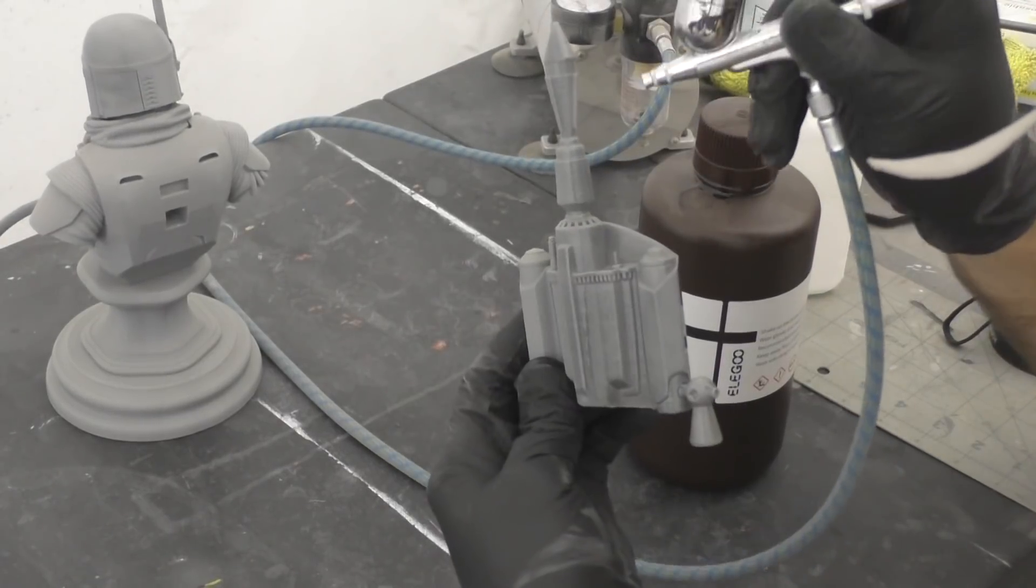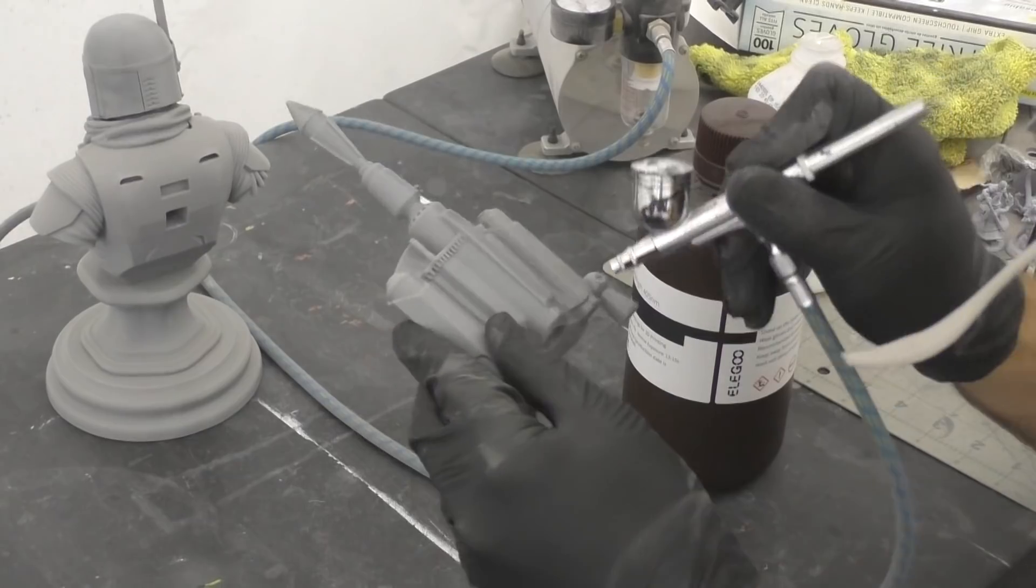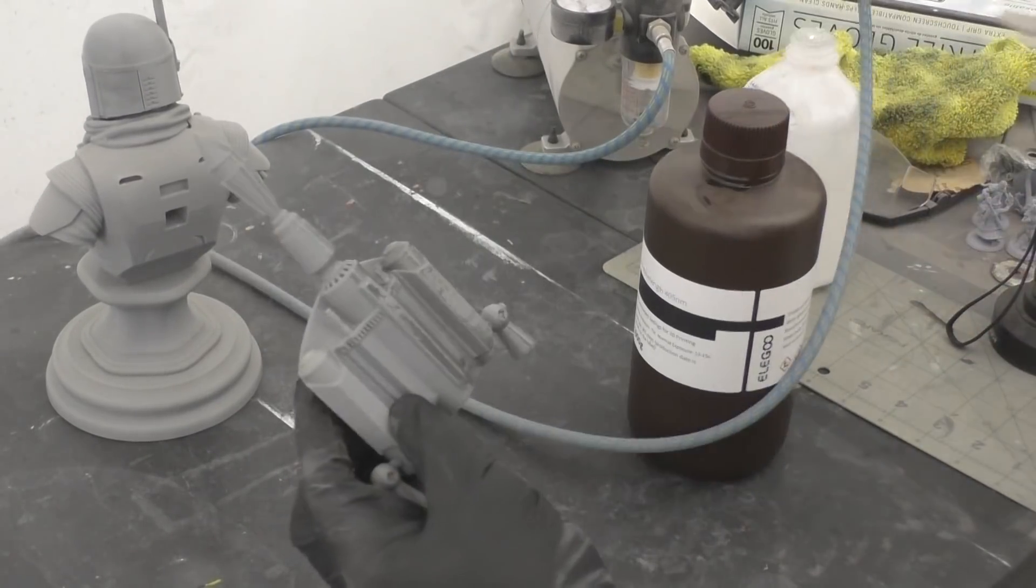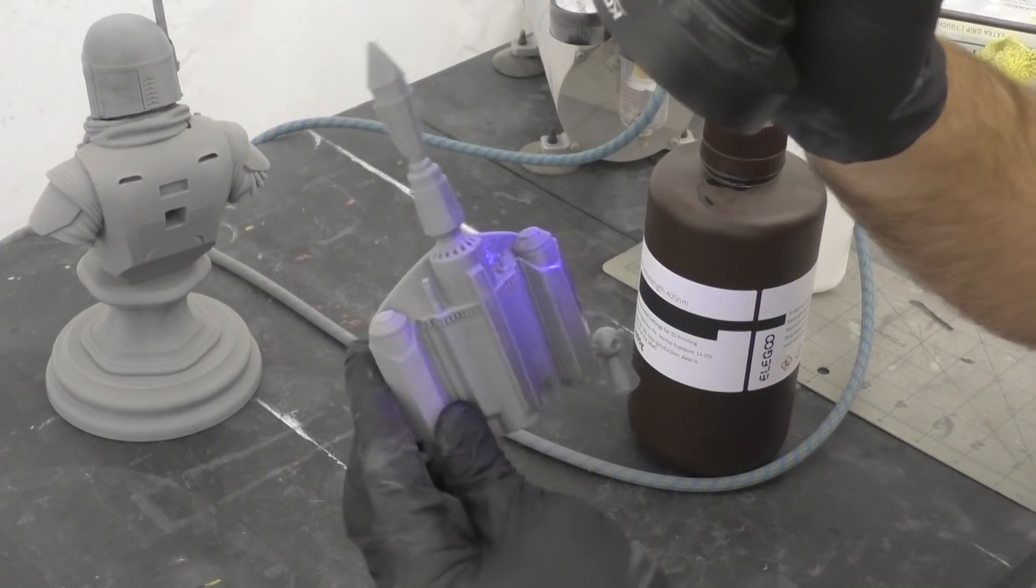Hello everybody and welcome back to the Galactic Armory. Today we're going to be covering a newer technique of applying resin to smooth out your 3D prints using an airbrush or aerosolizing it in some way.